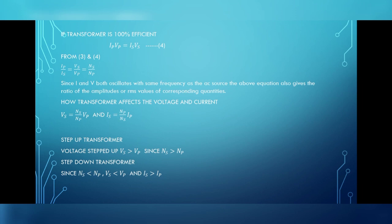Now, if the number of turns in the secondary is greater than the number of turns in the primary, then voltage gets stepped up. That is, voltage in the secondary will be higher than the voltage in the primary, and this type of transformer is called a step-up transformer. Similarly, a step-down transformer has number of turns in the secondary lesser than the number of turns in the primary. Therefore, the voltage in the secondary will be less than the primary and the current in the secondary will be greater than the current in the primary.